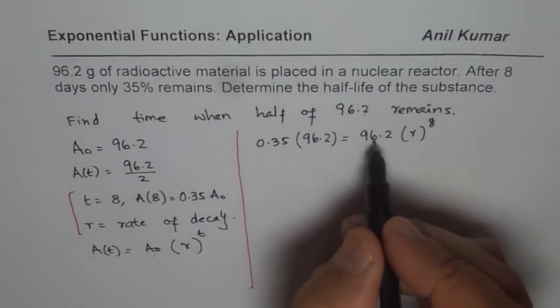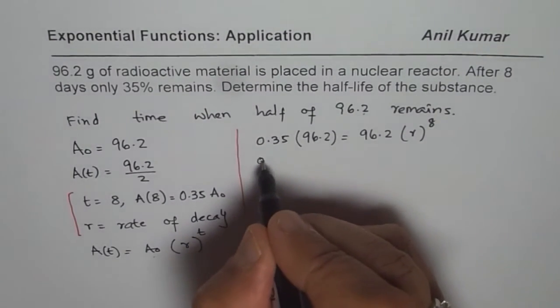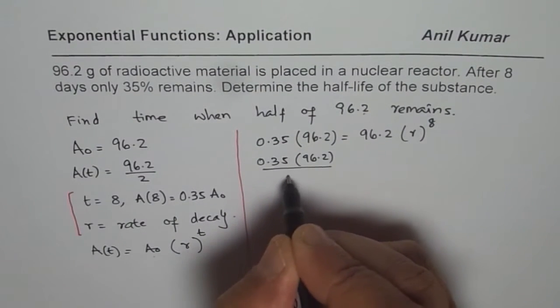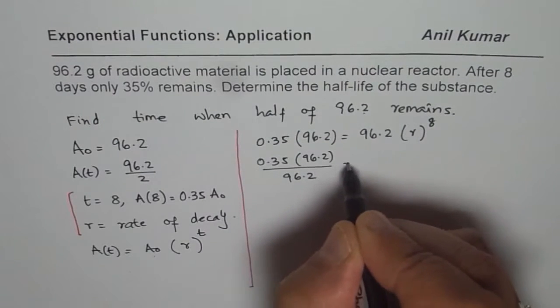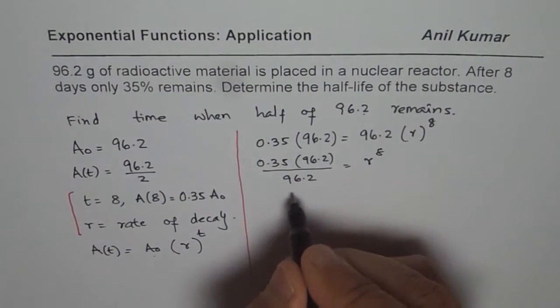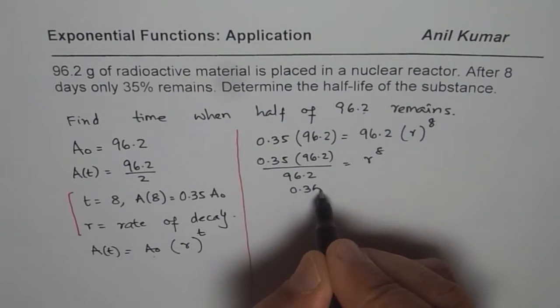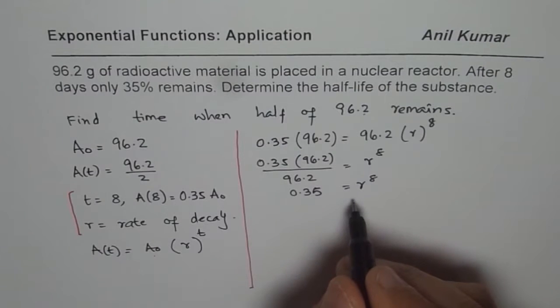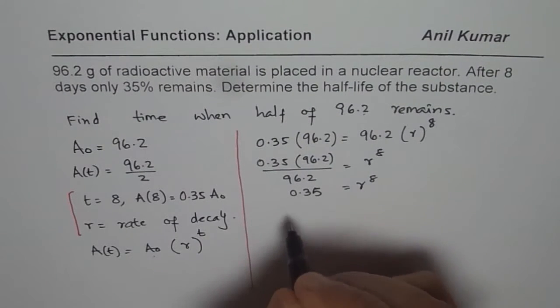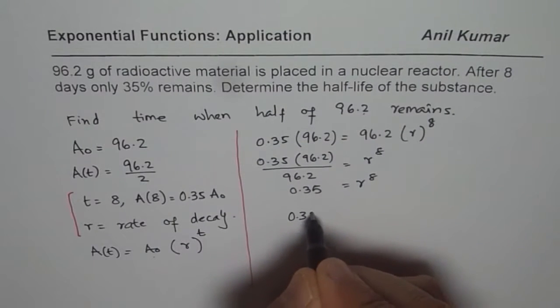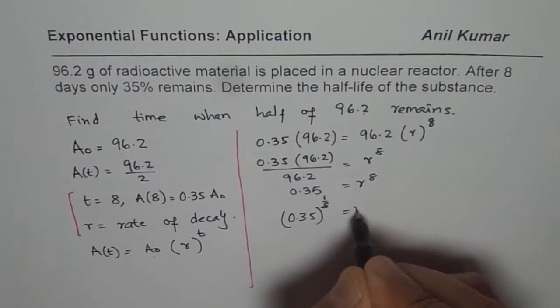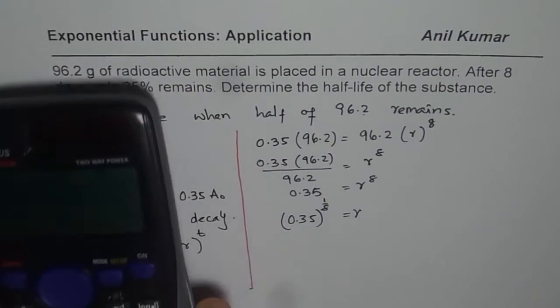Now to solve for R, we can divide by 96.2. So we get 0.35 times 96.2 divided by 96.2 equals to R to the power of 8. So we get 0.35 equals to R to the power of 8. Now we can actually take the 8th root to get R. So that is 0.35 to the power of 1 over 8 equals to R. So let us use the calculator and find this answer.